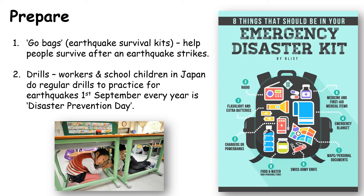Finally, there are many things we can do in preparation before an earthquake strikes. Most earthquakes will not kill you or destroy your whole house, but they may cut out electricity, gas, or water supplies. So people can put together an earthquake survival kit — a go-bag or grab bag — full of things to help them survive in the hours and days following an earthquake. The other thing we can do is regular drills — practicing what to do during an earthquake. School children might go underneath their desks to protect from a collapsing roof, using the drop, cover, and hold-on technique. In Japan they have Disaster Prevention Day every year on the 1st of September, where workers and school children practice their drills.